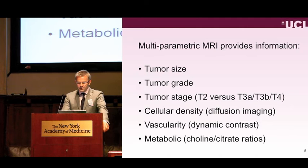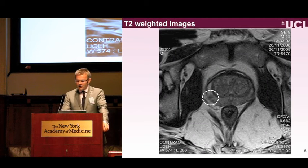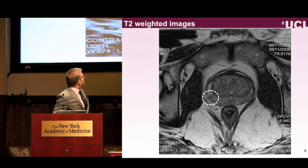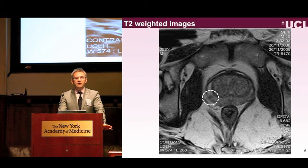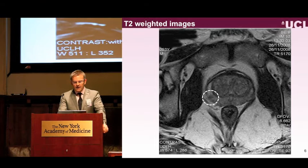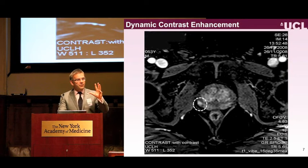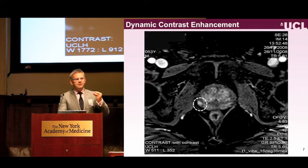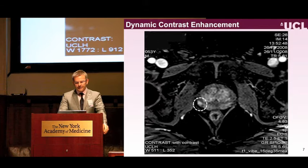Here is an MRI from November 2008, a T2 sequence. On a standard 1.5 Tesla machine—the kind doing hips and knees in your hospitals—this is the gadolinium phase: you can see the lesion light up before the rest of the prostate, exploiting the abnormal vasculature. And here you can see the diffusion deficits—the movement of water within the tumor is less than in the rest of the prostate because of the packed cellularity and membranes within it.